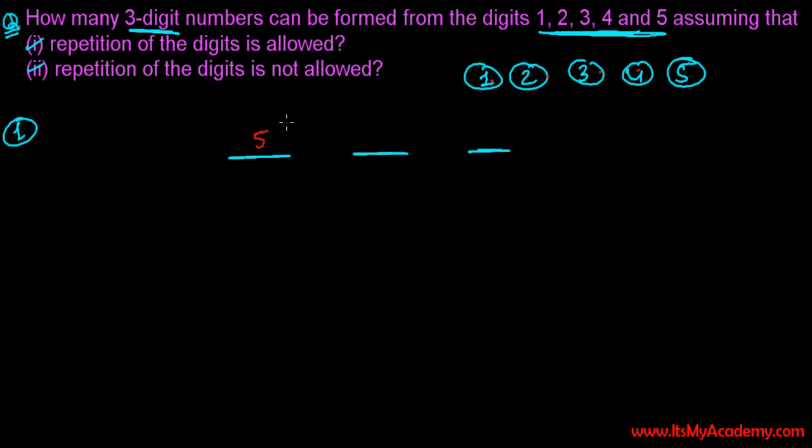And since repetition is allowed, if I'm writing here one, next time also I can write here one because repetition is allowed in the first case. So this can be also written five times and this can be also written five times. So five times five times five, it means 125 numbers are there. So how many three-digit numbers can be formed? There can be formed 125 numbers if the repetition of the digits is allowed.